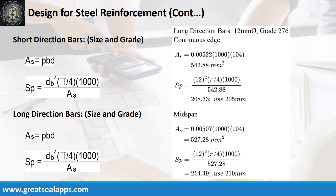At long direction, given continuous edge ρ equals 0.00507. The area of steel is 542.88 square millimeters, and the spacing for 12 mm bar is 205 mm.